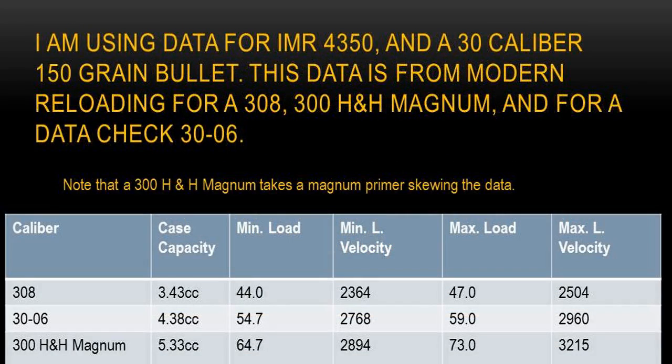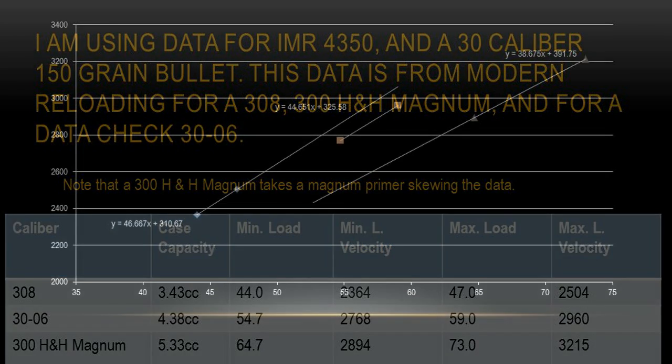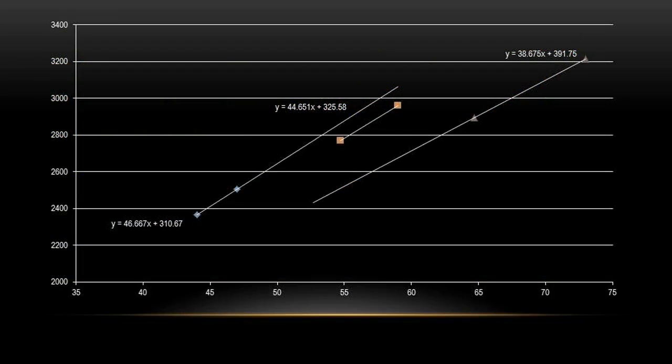I am using data for IMR 4350 and a .30 caliber 150 grain bullet. This data is from modern reloading for a .308, .300 H&H Magnum and as a data check .30-06. Note that a .300 H&H Magnum takes a Magnum primer skewing the data. I have graphed the cartridges .308, .30-06 and H&H Magnum.